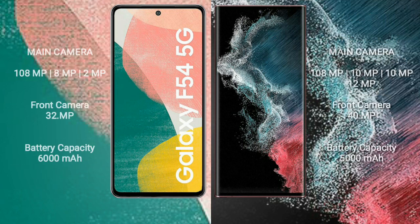Samsung Galaxy A54 has a rear triple camera setup: 108MP plus 8MP plus 2MP, and a 32MP front camera. Samsung Galaxy S22 Ultra has a rear quad camera setup: 108MP plus 10MP plus 10MP plus 12MP, and a 40MP front camera.